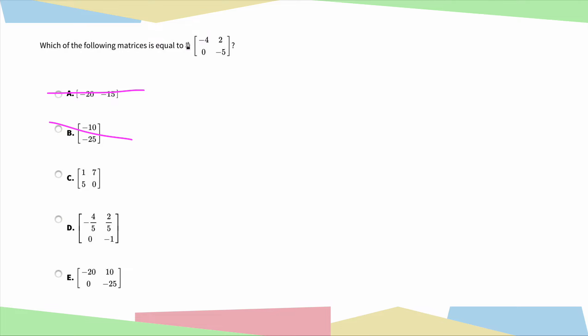So if I wanted to keep going, I would do 5 times 2 is 10, 5 times 0 is 0, and then 5 times negative 5 is negative 25. Just confirming that the correct answer in this case is E. All right, moving on.